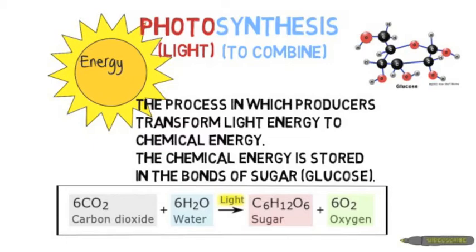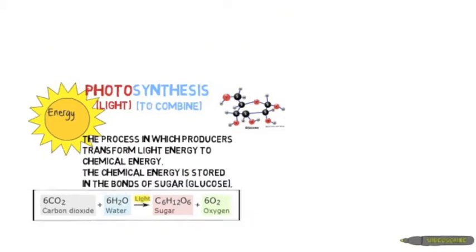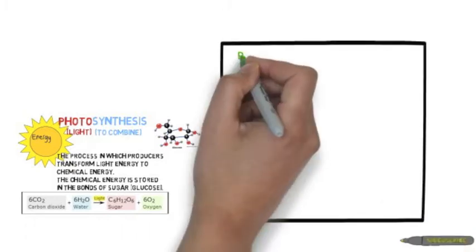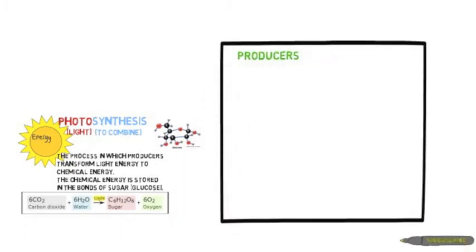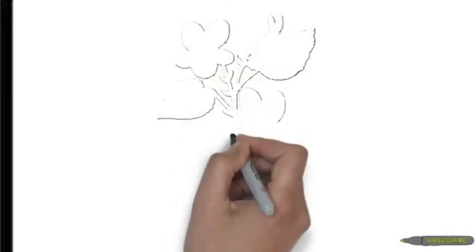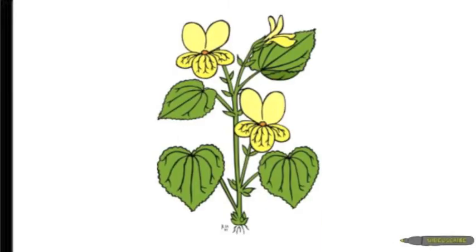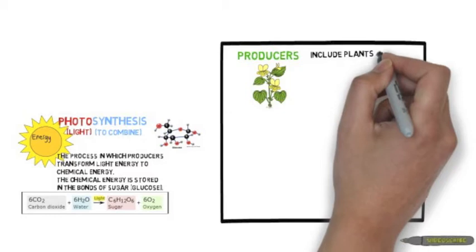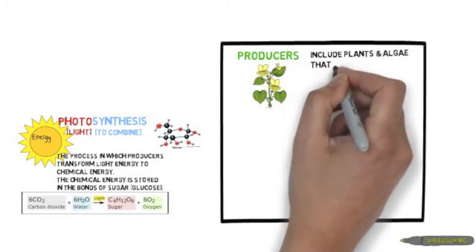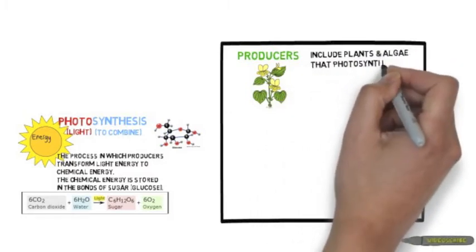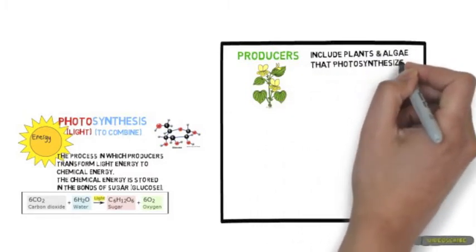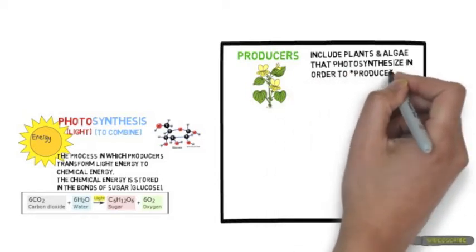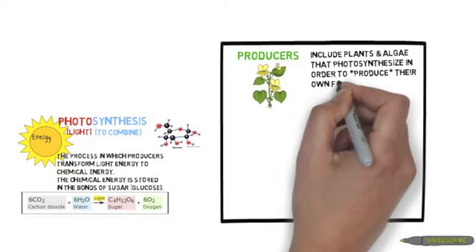The light energy transforms to chemical energy and is stored in the bonds of glucose. Now, who photosynthesizes? Producers. Producers include plants and algae that photosynthesize in order to produce their own food.